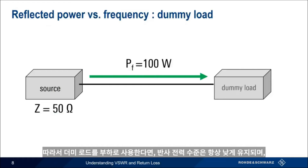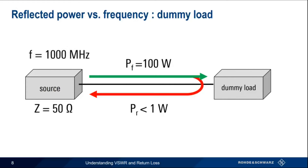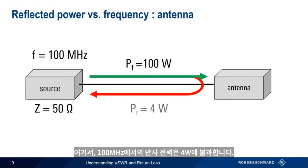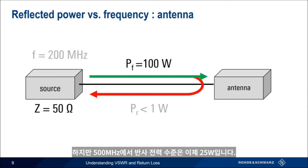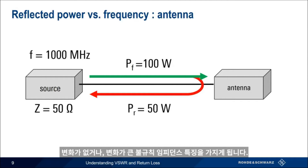If we were to use our mostly resistive dummy load, the level of reflected power would remain low and roughly the same even as we change the frequency from 100 MHz to 200 MHz, 500 MHz, or even a gigahertz. If, however, we use our antenna as a load, the level of reflected power will be a function of frequency. In this example, at 100 MHz the reflected power is only 4 watts; at 200 MHz it goes down to less than 1 watt; but at 500 MHz the reflected power is 25 watts, and increases to 50 watts at a gigahertz. Most real-world devices fall somewhere in between these two somewhat extreme cases.